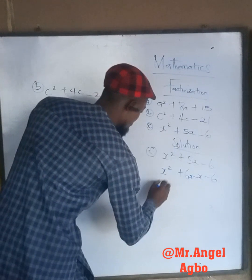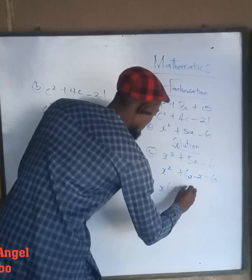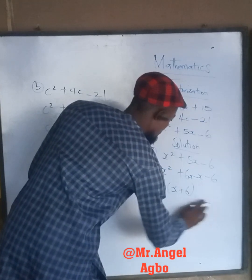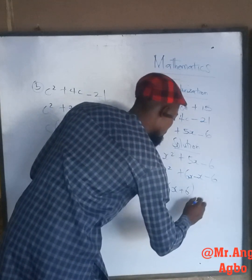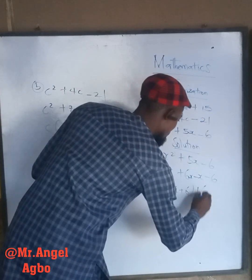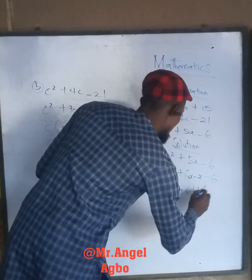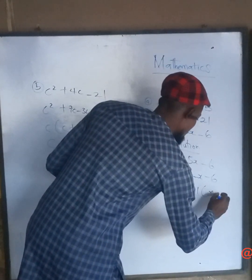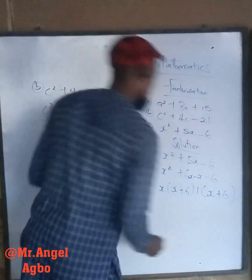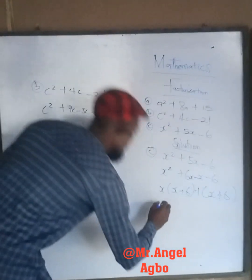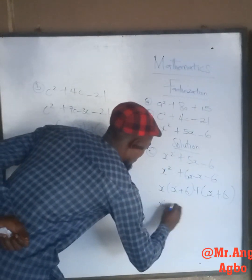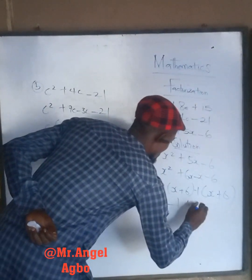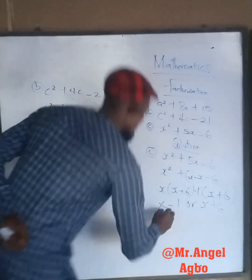We have x, bracket, x plus 6, bracket, minus 1, bracket, x plus 6. So we have x plus 6, times x minus 1.